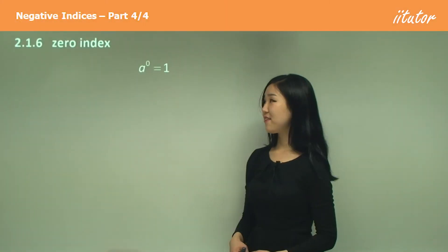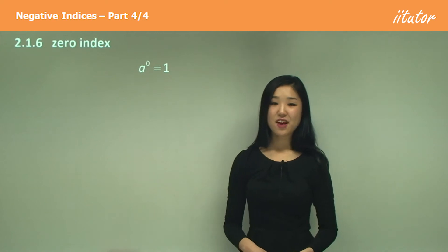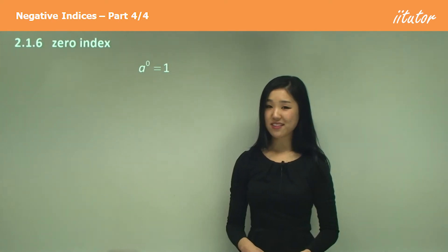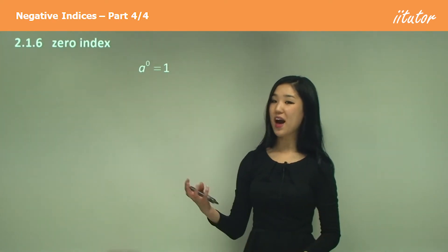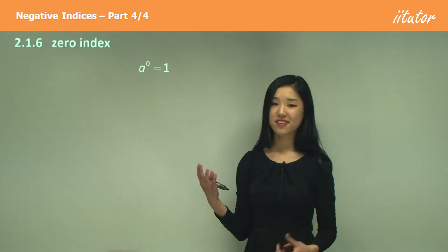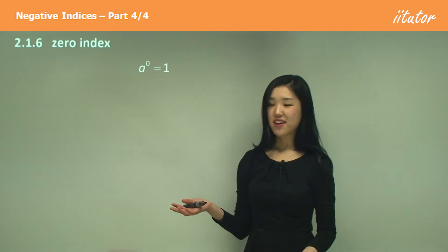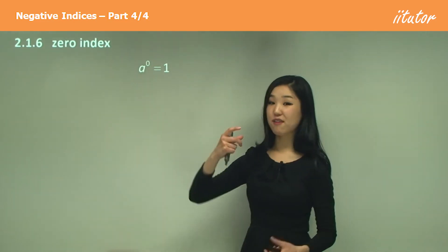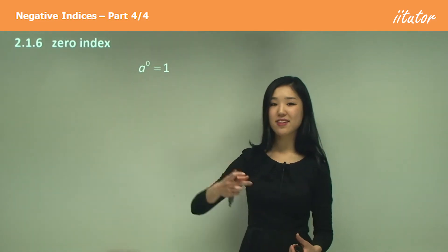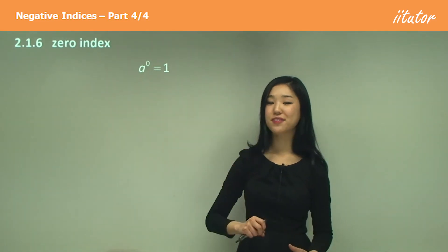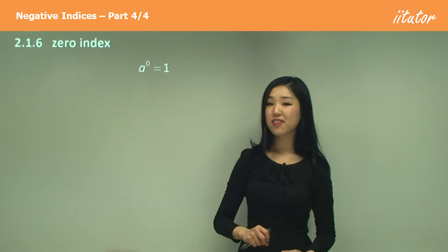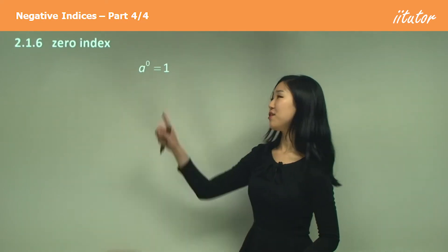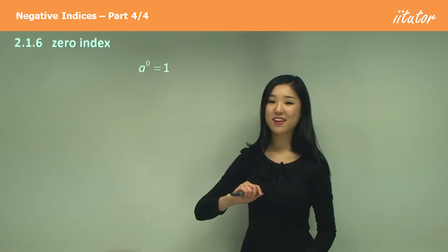Now let's look at zero index. What I mean by zero index is when the power is zero. So say for example, if a is the base and I have a power of zero, the outcome will always be one.